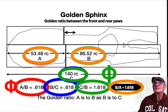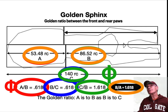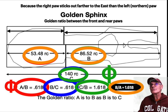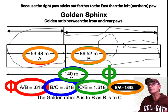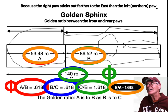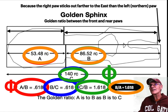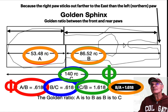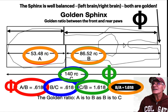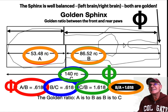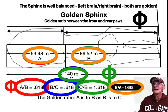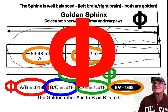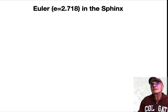What about the left side? You get the same result, except notice it's a slightly different measure than the right side because the right paw sticks out farther to the east than the left. So you get a different ratio, but it still ends up being the golden ratio on the left side. The Sphinx is a golden figure, and taking the idea of right brain and left brain — he's pretty balanced, because both sides conform to Phi.